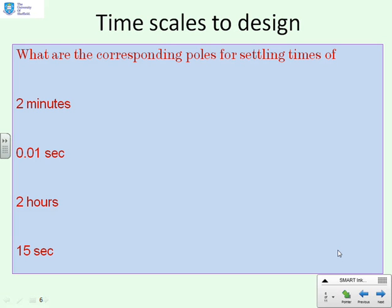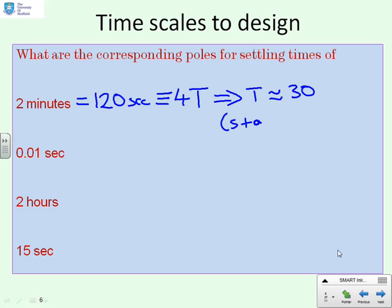Some questions then, just to make sure we've got this. What are the corresponding poles if you want settling times given here? Now 2 minutes means 120 seconds. And what we've said is that that has got to be equivalent to 4T. And therefore that implies that T is approximately 30. And therefore we must have s plus a is approximately s plus 1 over 30. So your pole has got to be minus 1 over 30. Or roughly because remember these answers are always approximate when you're talking about real systems.